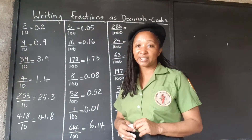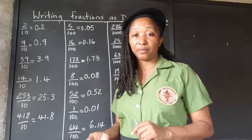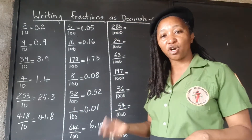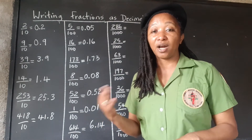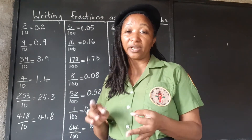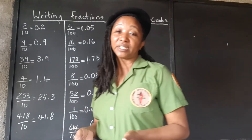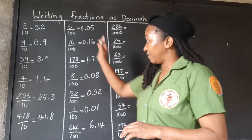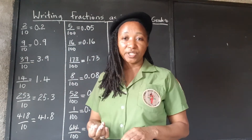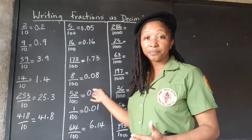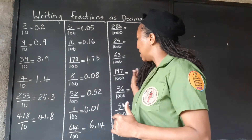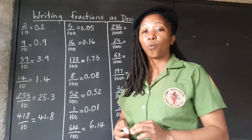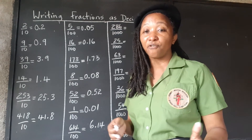Now let's do the thousands. For the thousands, we're going to be moving three places to the left, since there are three zeros. You can use the number of zeros as a shortcut to indicate how many places back to move when dividing by a power of 10. If it's 10 — one zero, move one place. If it's 100 — two zeros, move two places. If it's 1,000 — three zeros, move three places to the left from the end of the whole number.